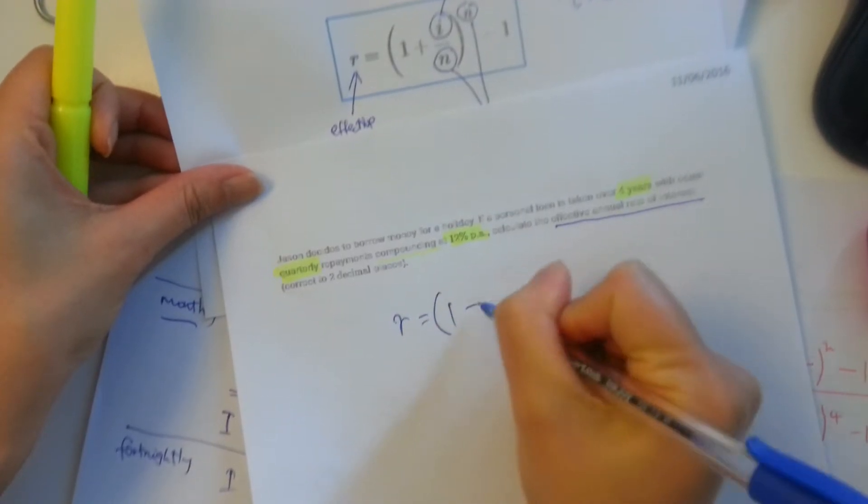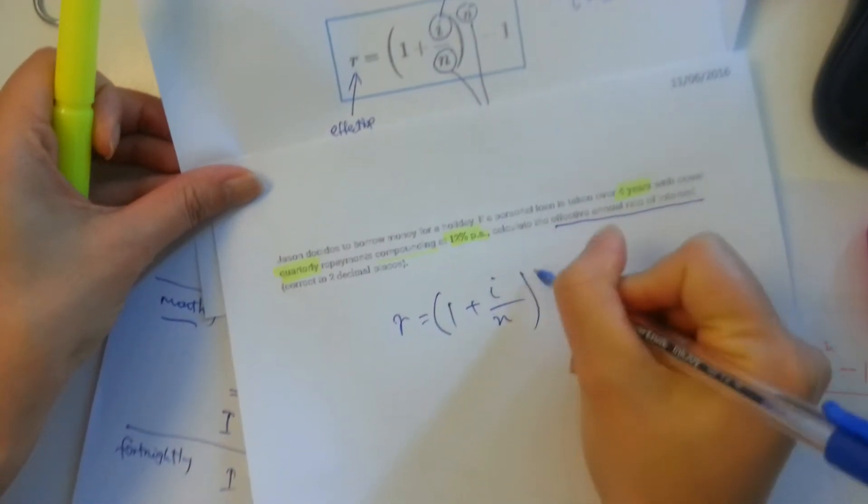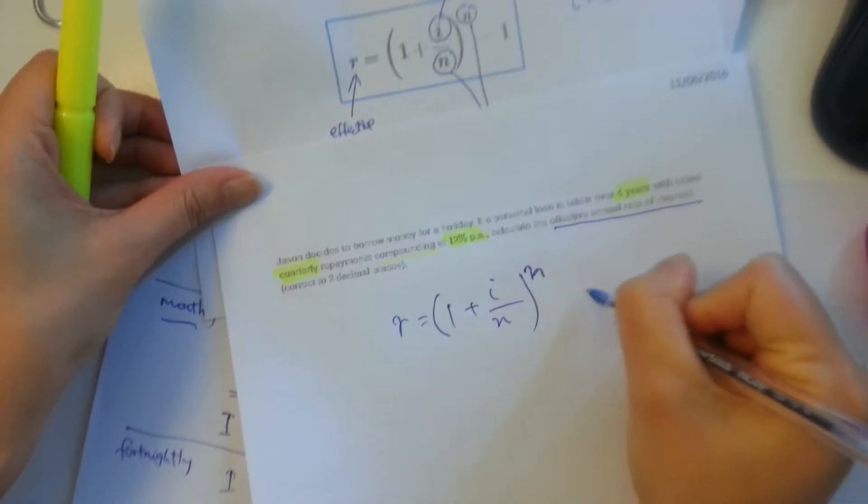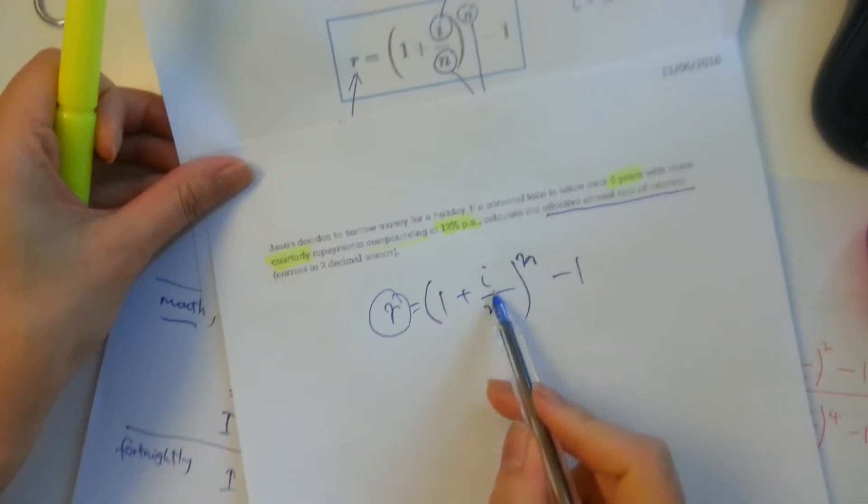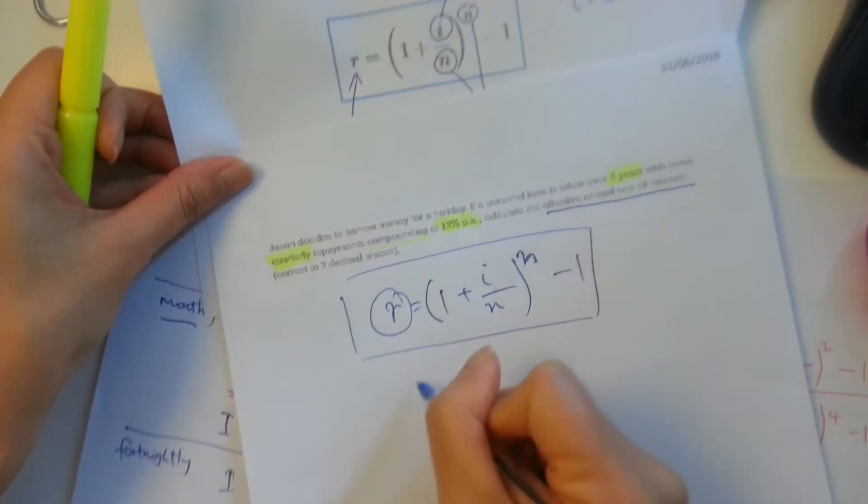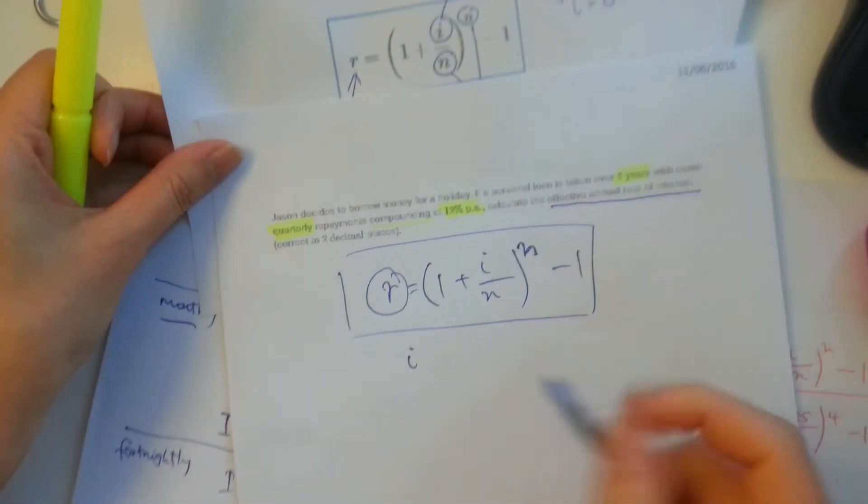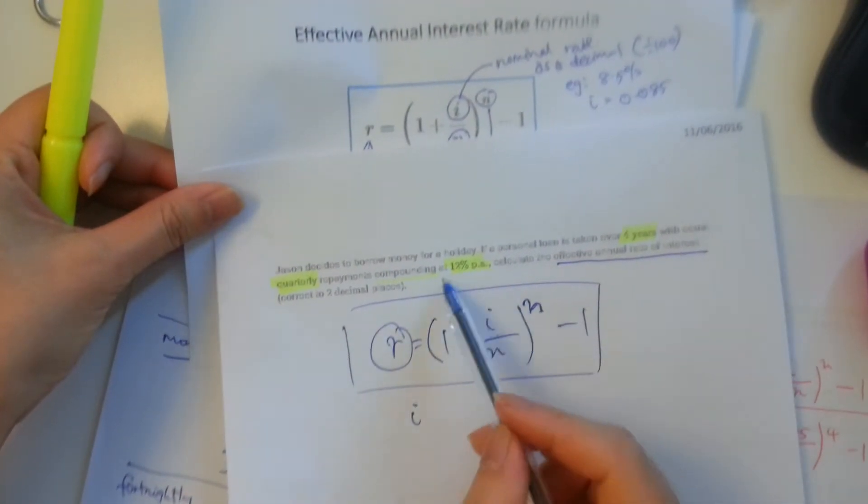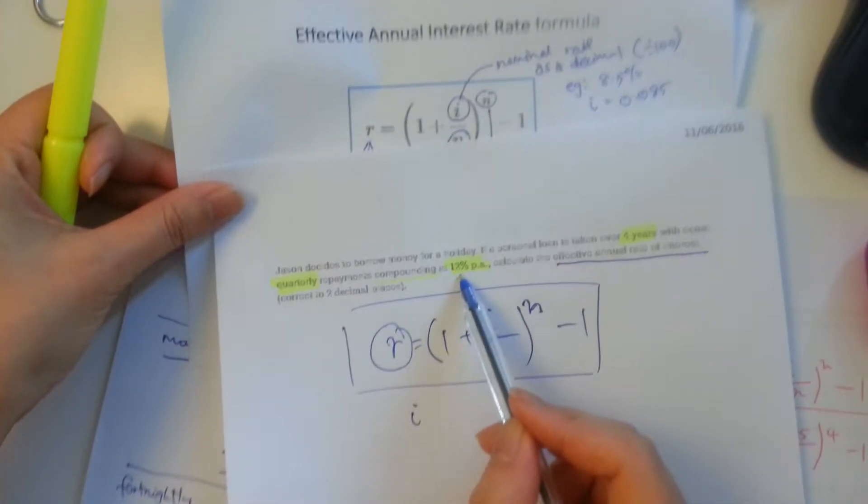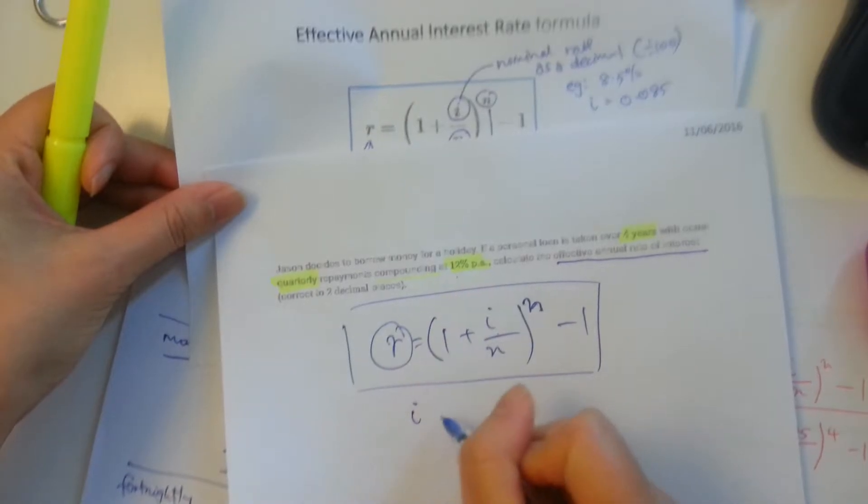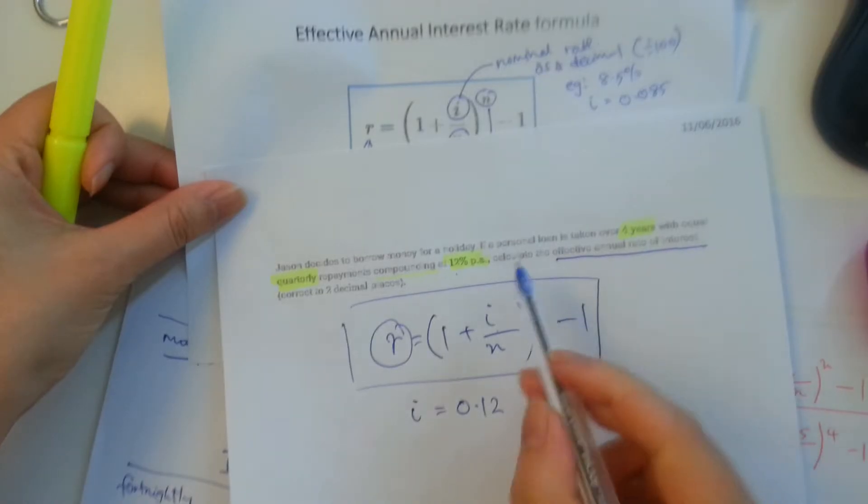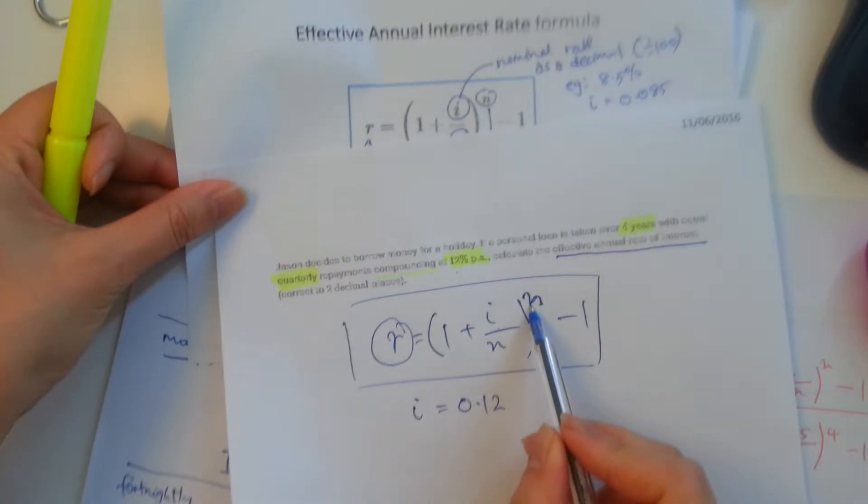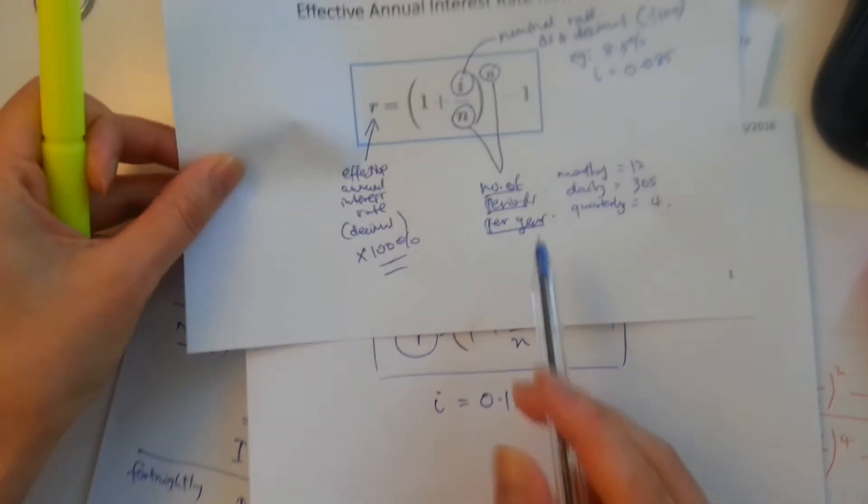I'll pull that out so you can see. So we will write it out. R equals 1 plus I over N to the power of N minus 1. So we want to find R. We're going to put in the I and the N. Our I, remember it's the nominal rate as a decimal. So at the moment it says 12%. To convert it to a decimal, we divide it by 100, so I is 0.12. And the N is going to be the number of payments per year.